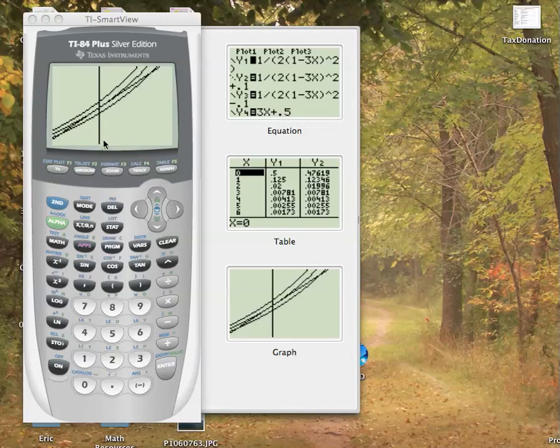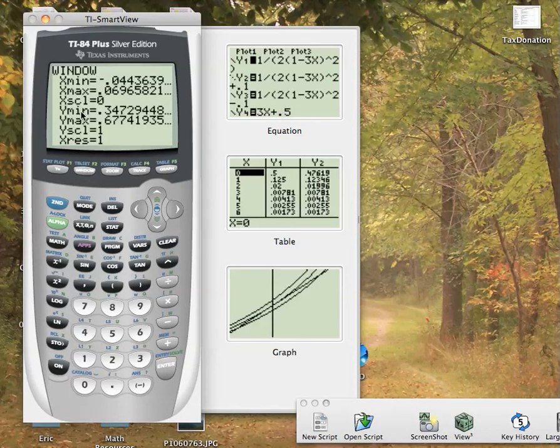That's my range within which this linear approximation is within 0.1. If I look at the window, it's basically my x values from 0.1.